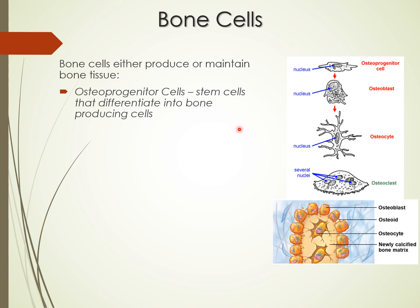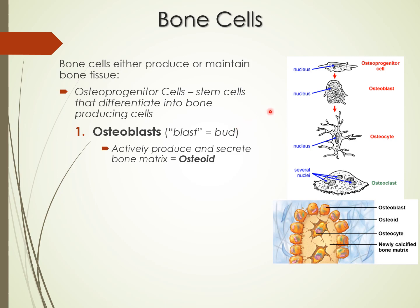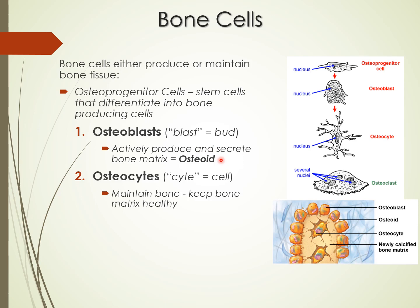Looking at bone cells: we have osteoprogenitor stem cells that differentiate into osteoblasts — the bone-producing cells. 'Blast' means bud, so these cells actively produce bony matrix. The bone matrix is called osteoid — a special name for bone matrix. Once an osteoblast has produced all that bone matrix and gets stuck in its lacunae, it becomes an osteocyte — a mature cell that maintains the health of the bone.